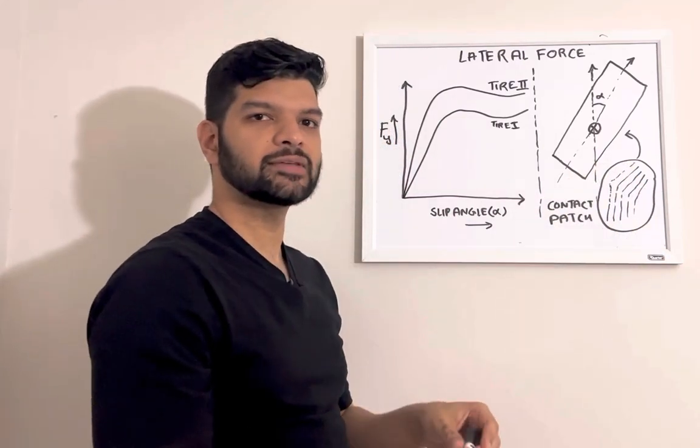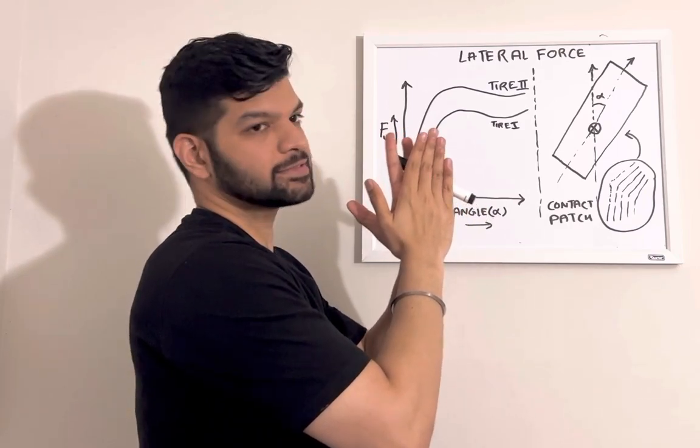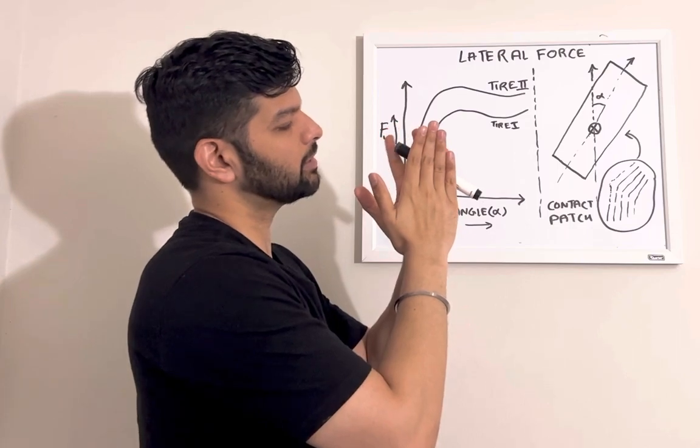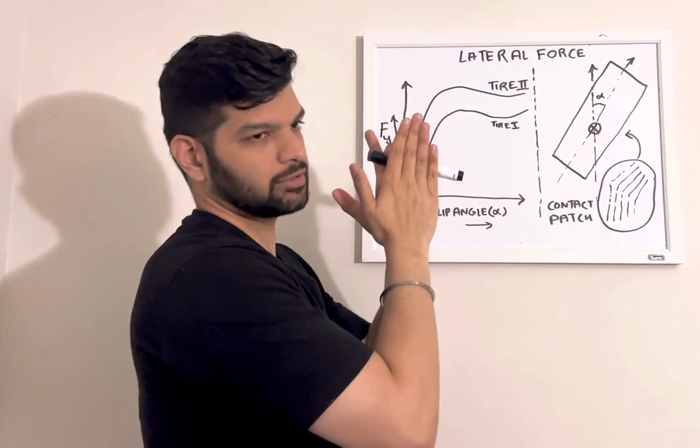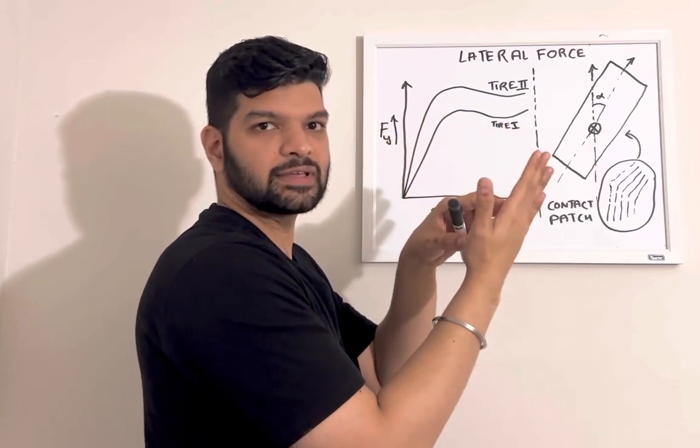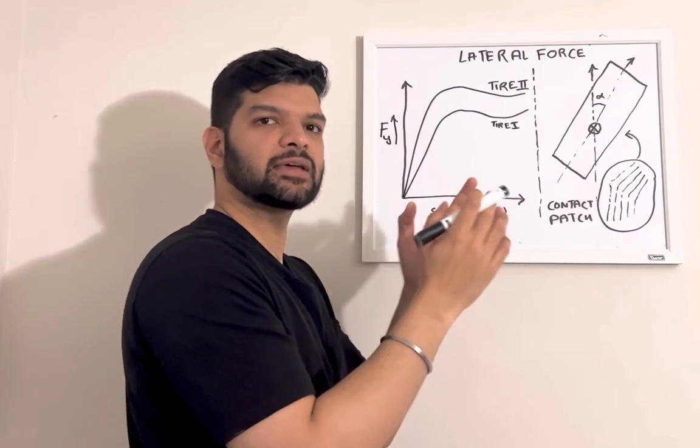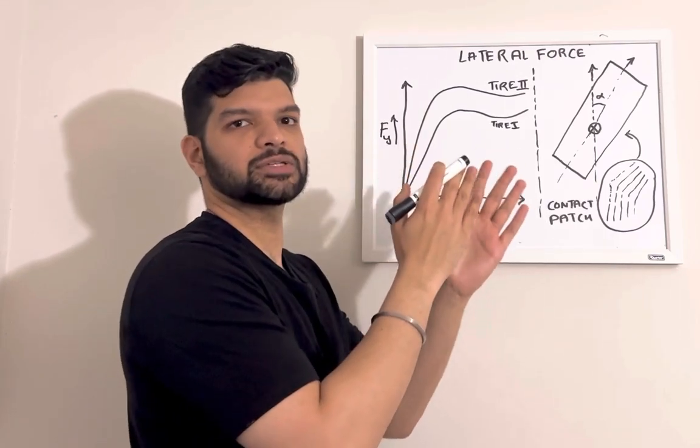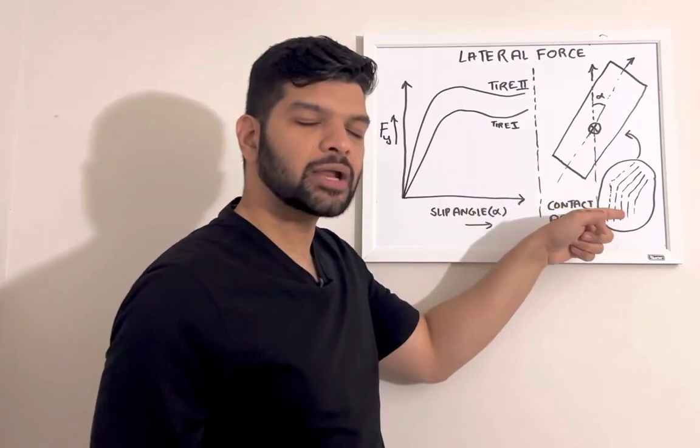You can try to visualize this by using your hand. If you move your hand slightly in this direction, the front hand is the tire and the backwards hand is the road. You can feel the skin which is in contact with this hand is trying to stay in that particular location itself and not trying to move. That's what happens in the tire contact patch as well.